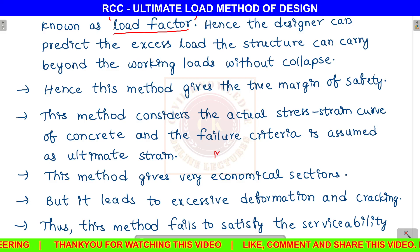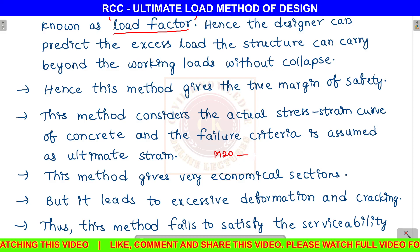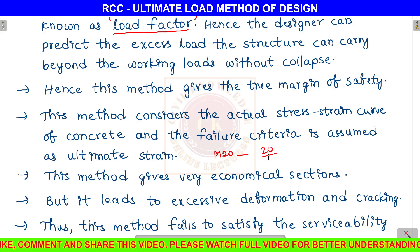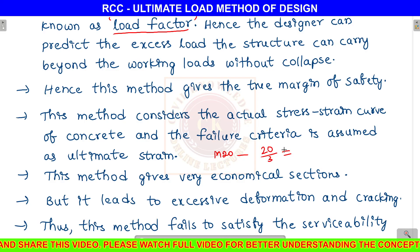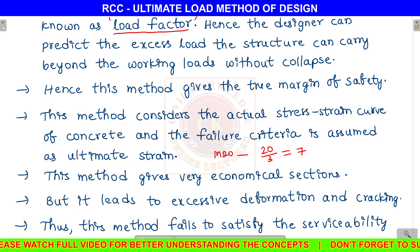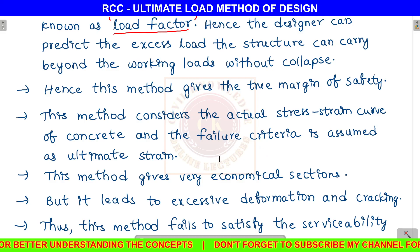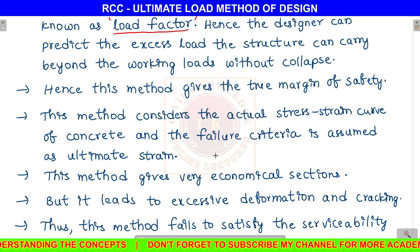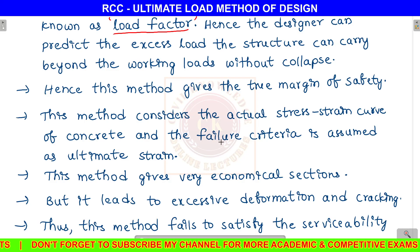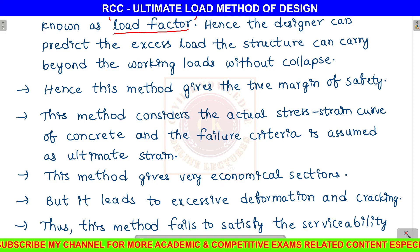For example, consider M20 concrete in the working stress method. We have a characteristic strength of 20 N/mm², but we divide it by a factor of safety of 3, reducing it to about 6.7 N/mm². So we are using only a fraction of the material strength, which leads to very large sections. We are not using the full material strength, which makes the structure uneconomical.